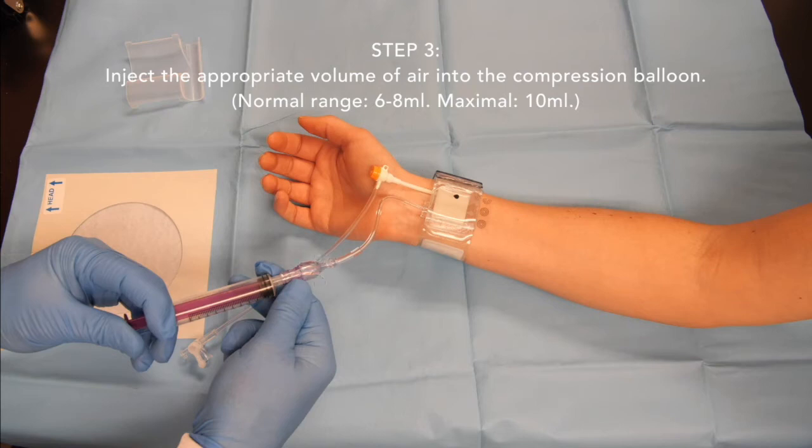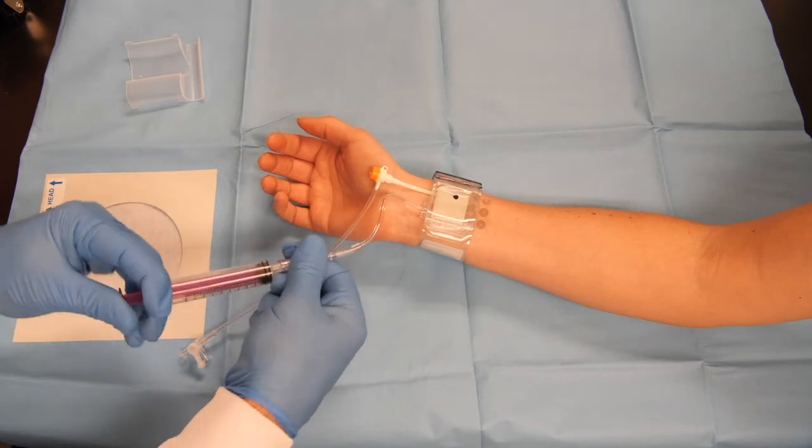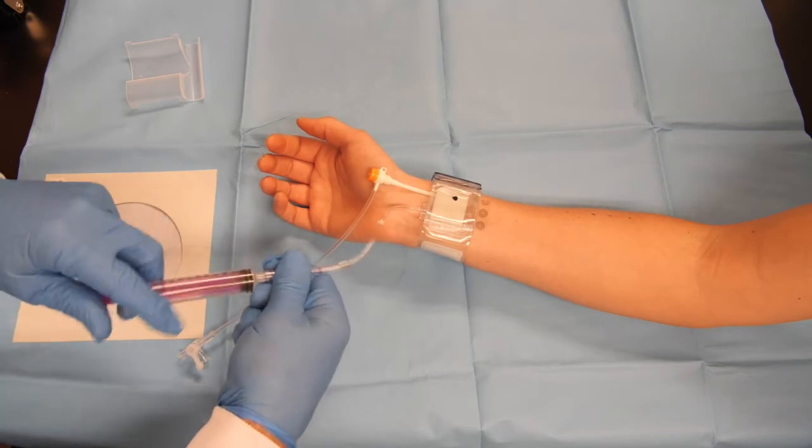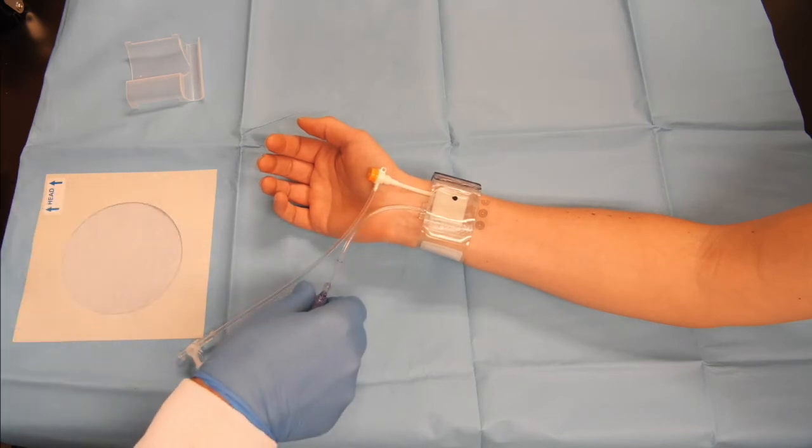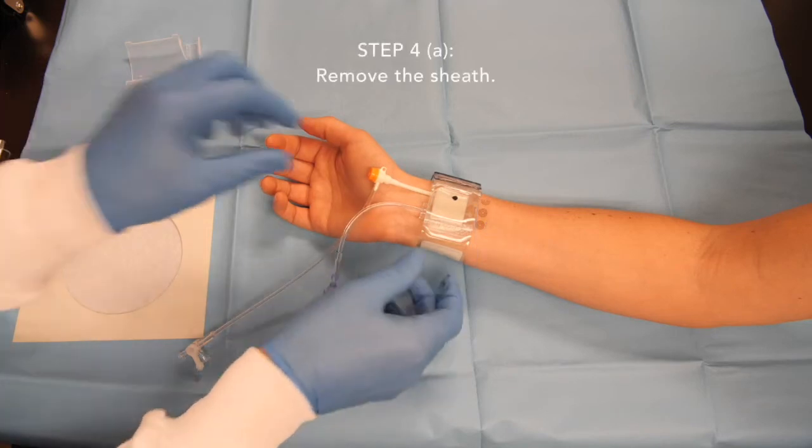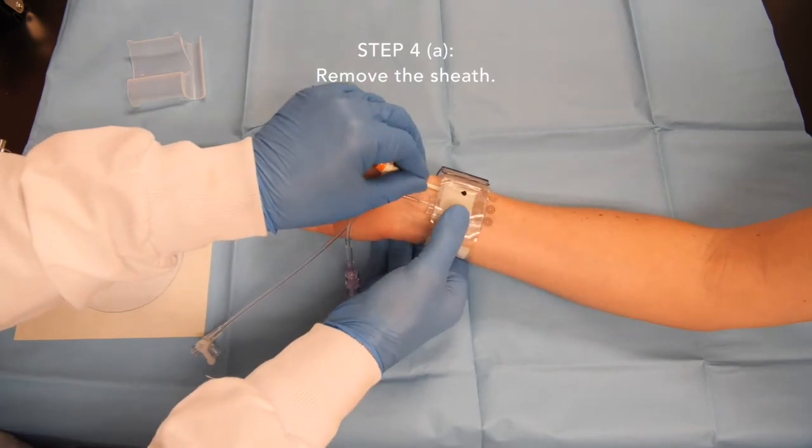Once all the air has been transferred from the syringe to the balloon, while continuing to maintain pressure against the syringe barrel, gently twist the barrel of the syringe anti-clockwise while holding the air valve steady and withdraw the socket end of the syringe from the plug end of the valve. The air valve will close to maintain the air pressure in the balloon. Remove the introducer sheath.